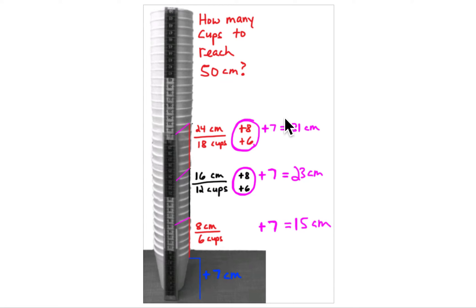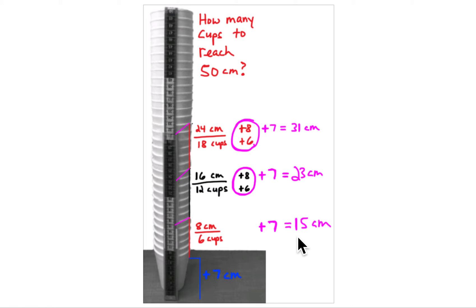What if we ask how many cups it takes to reach 50 centimeters? We're going to add additional cups. Don't forget: if you take away those seven centimeters, the rest follows a pattern we can use. The first six cups gets you to eight centimeters of rim height; adding seven gives 15 centimeters total. Adding another six cups is another eight centimeters — 16 centimeters of rims plus seven equals 23 centimeters total.